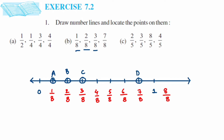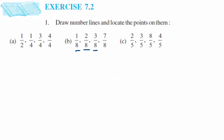Moving to the third question — we have both a proper fraction and an improper fraction. For example, 8 upon 5: since 8 is greater than 5, it is an improper fraction and will lie after 1. The denominator is 5, so between every two whole numbers I have to make 5 equal parts.